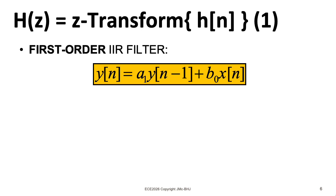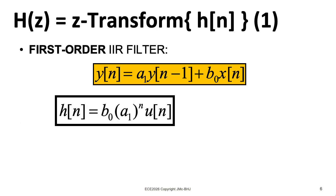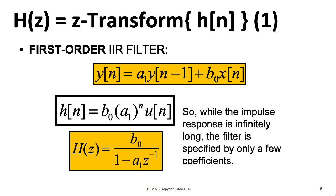So I have three different descriptions of this first order IIR filter. I have the difference equation, I have the impulse response, and I have the system function. The impulse response is infinitely long, but we have this nice compact formula for it that's specified by only a few coefficients.